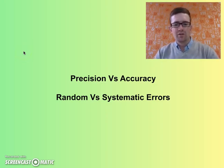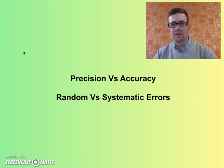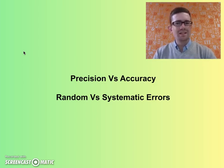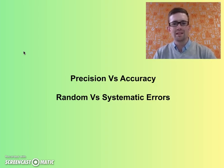Hi everyone. I've got a video lesson here for you about precision versus accuracy and random versus systematic error. These are some really important concepts in any scientific subject that you're studying, so it's really important to have a good understanding of them. Let's have a look at what they're all about.